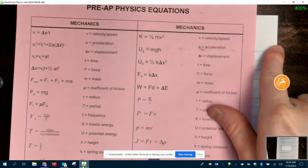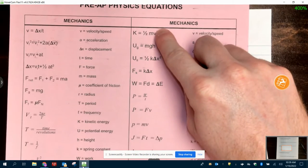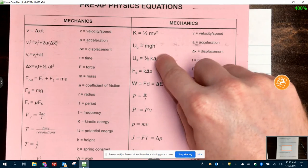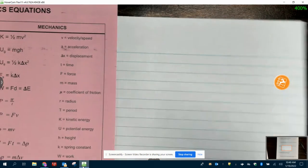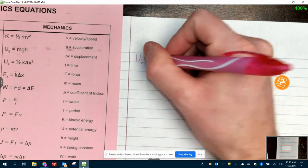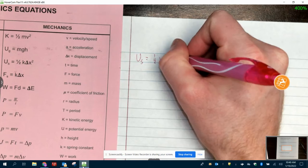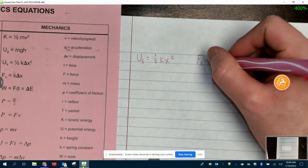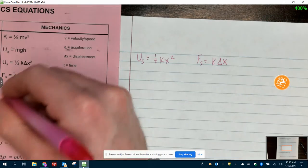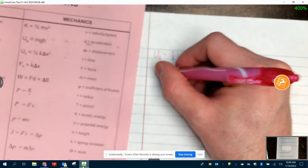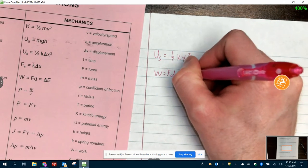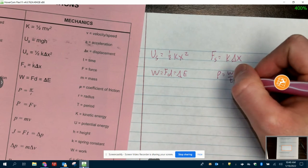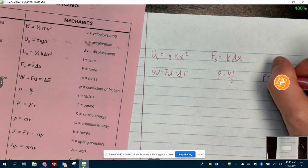On your equation sheet, what we're using on the test on Thursday: K equals one-half mv squared, UG equals mgh. We're going to write this down. We've got US, which is spring potential energy equals one-half kx squared. We've got spring force is k delta x, and then w equals fd equals delta e. This one is new today, along with power is work over time, and power is force times velocity.